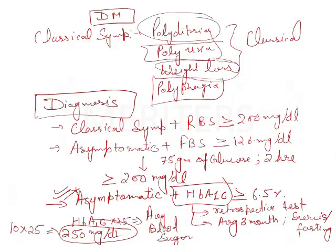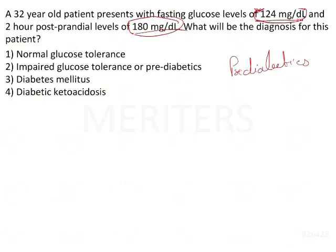In this question, the fasting glucose level is less than 126 — that is fine. The 2-hour postprandial level is 180, which falls between 140 and 200 mg per deciliter. So the patient is classified as having impaired glucose tolerance, a pre-diabetic condition. The answer is impaired glucose tolerance.